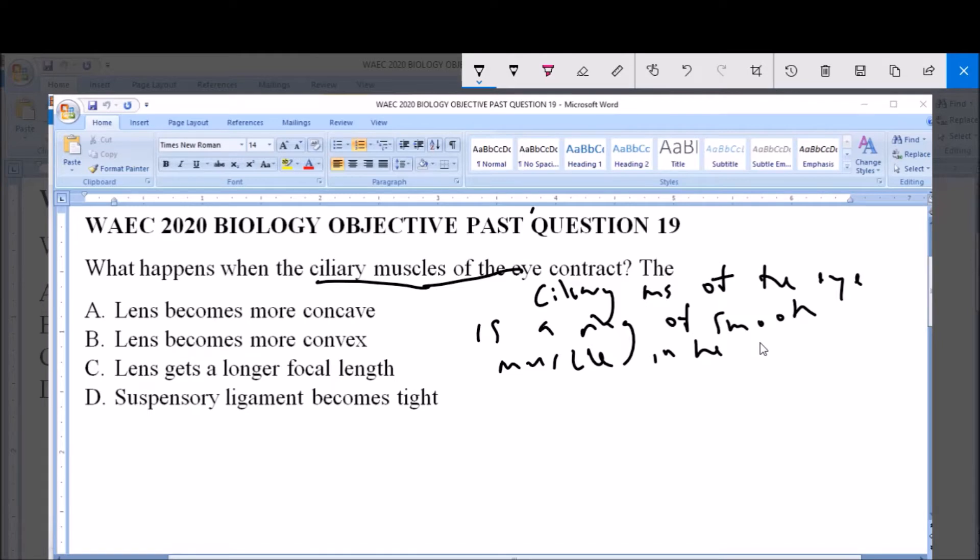And with its contraction, what happens is that it controls accommodation by changing or altering the lens structure.